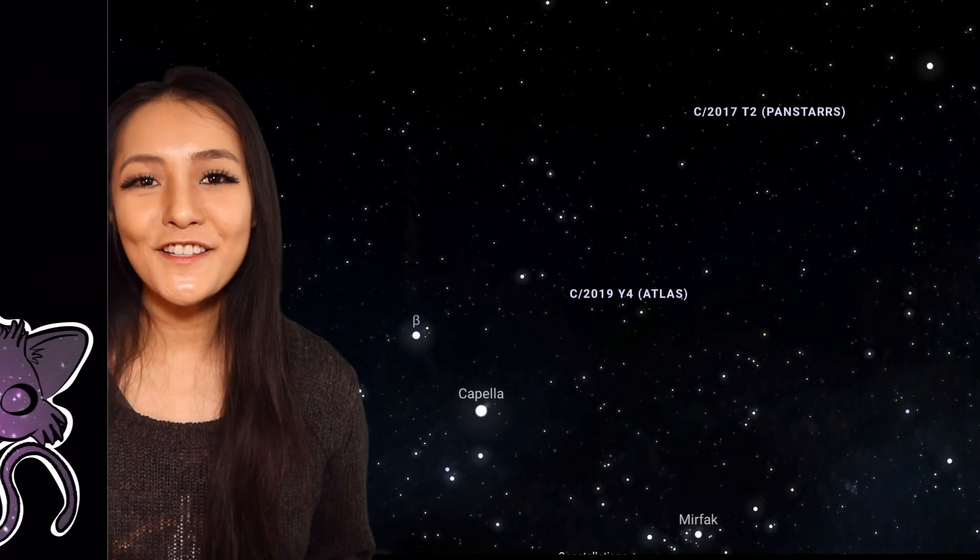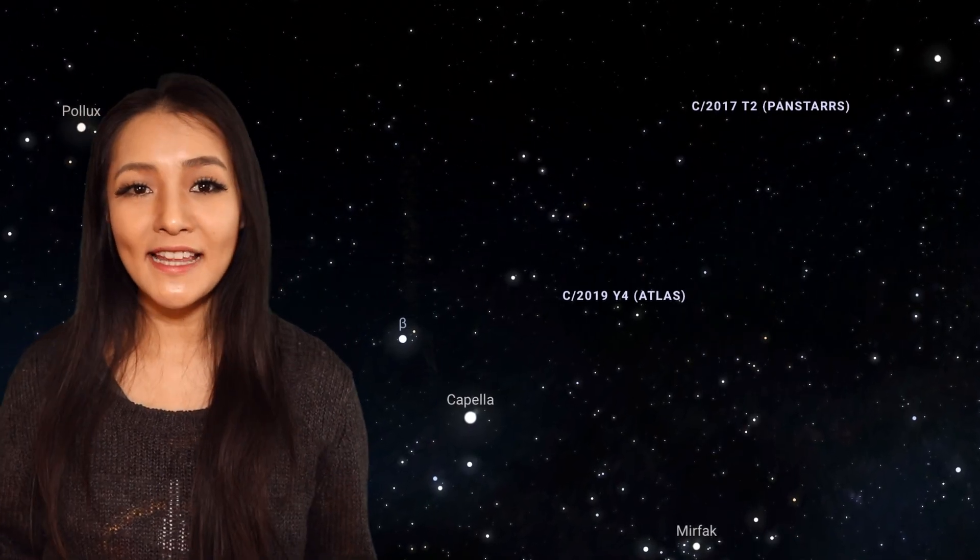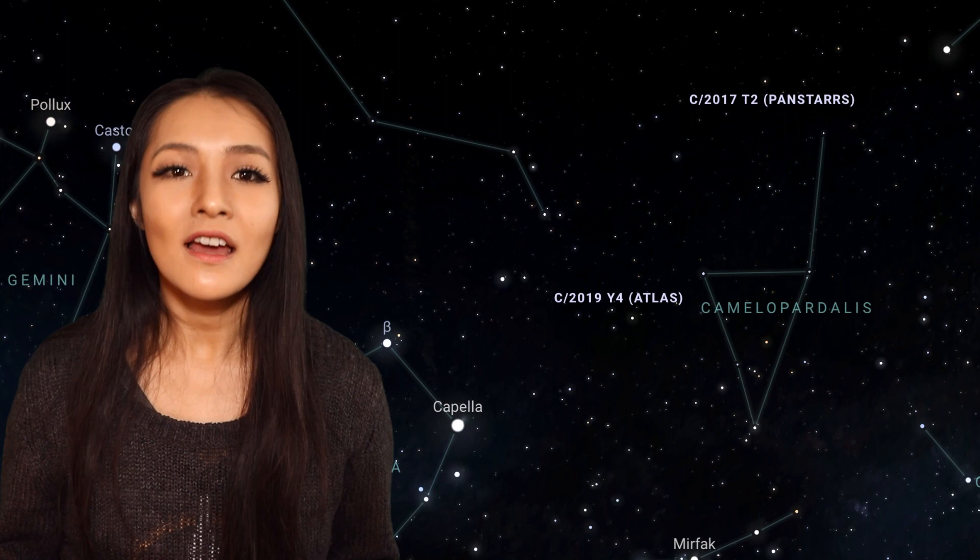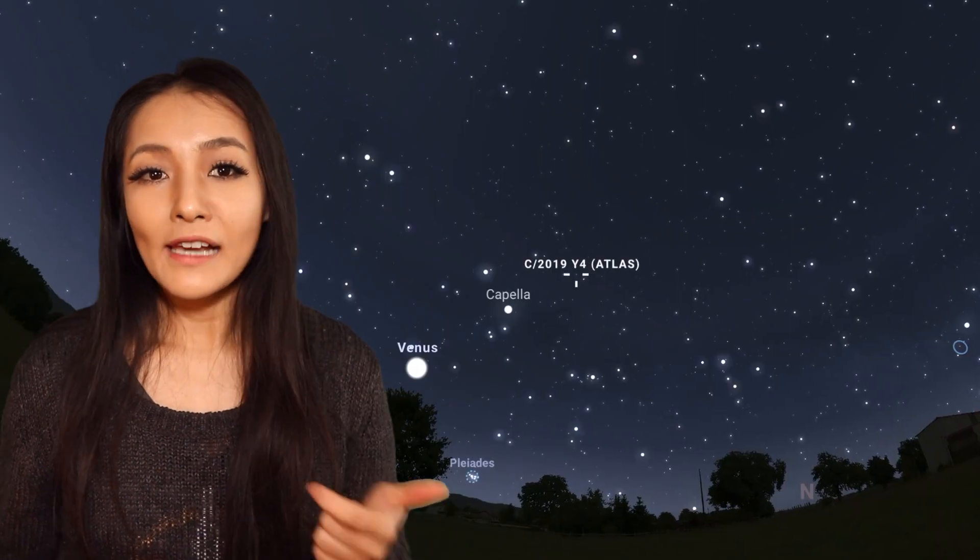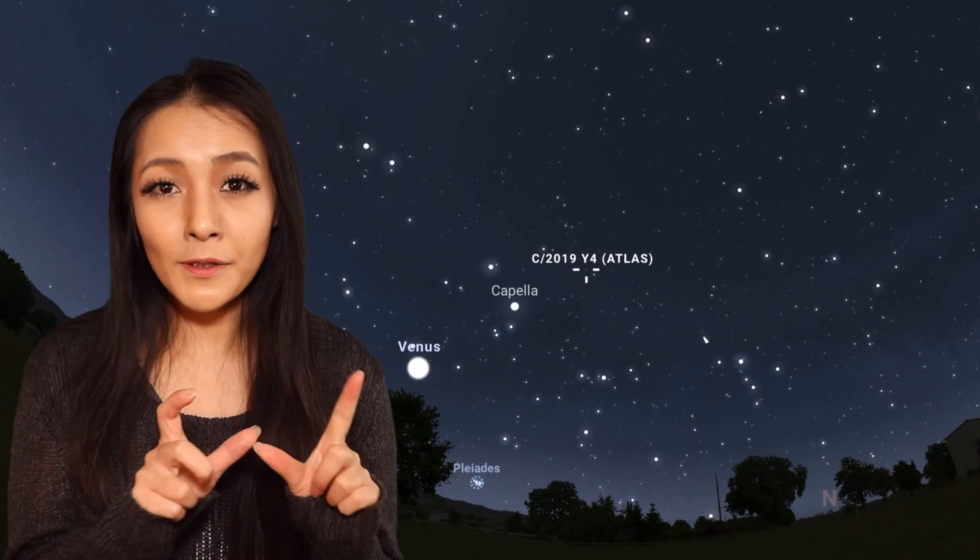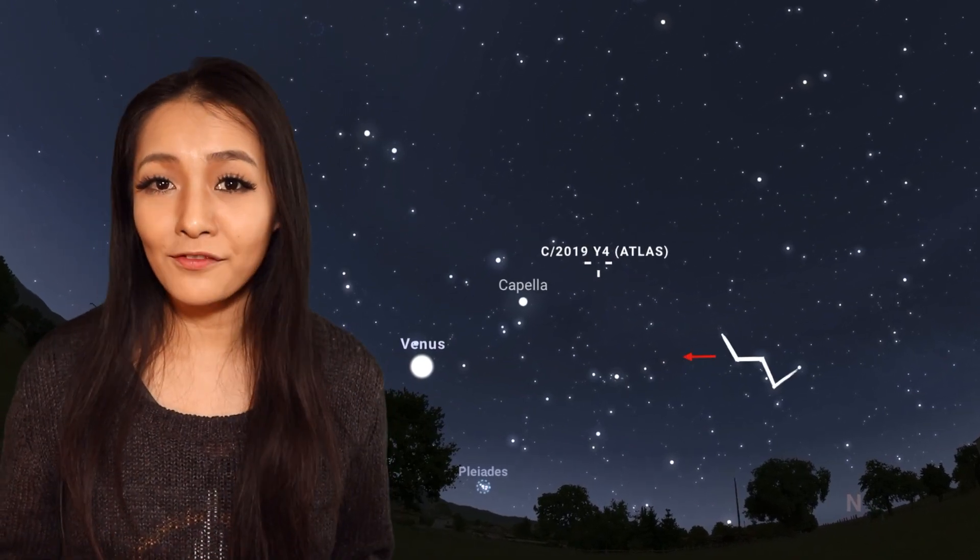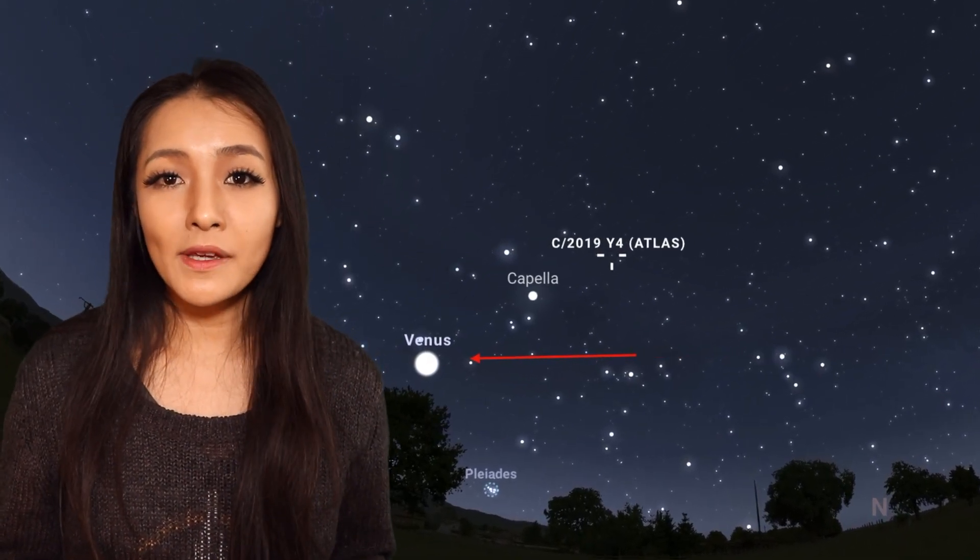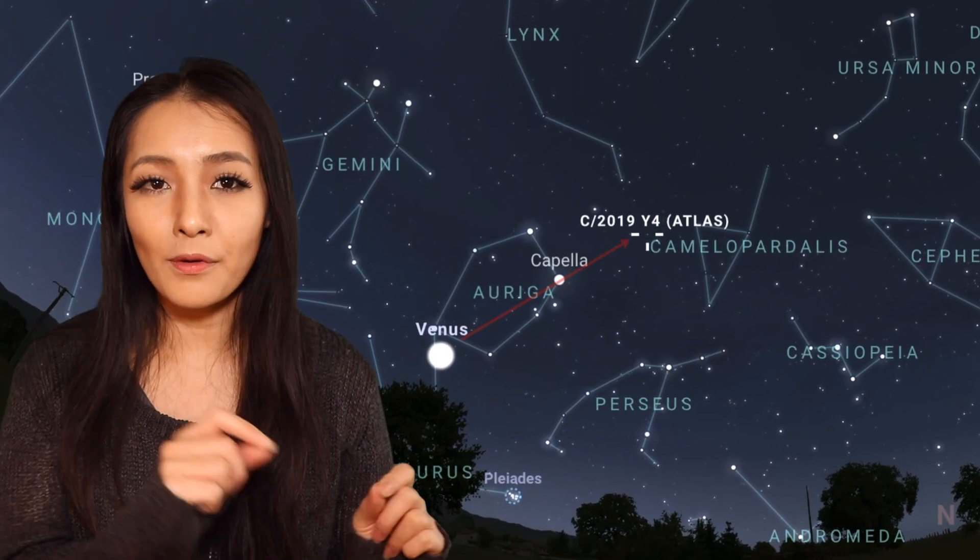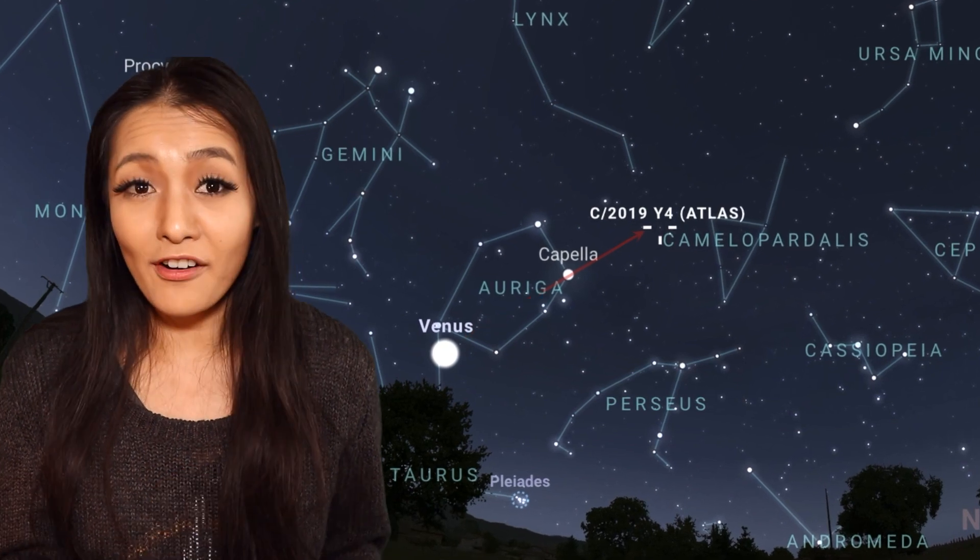On May 1st, to find Atlas on the sky, it can be found in the constellation of Camelopardalis. You can use either binoculars or a telescope. Look left of Cassiopeia, the W, to find the bright planet Venus. And between Cassiopeia and Venus, Atlas can be found at twice the distance of Venus and the bright star Capella and in the same direction.